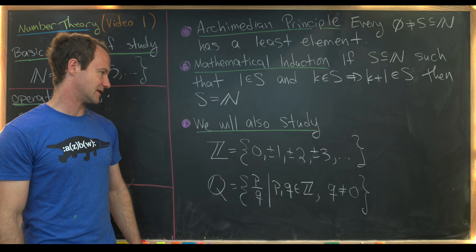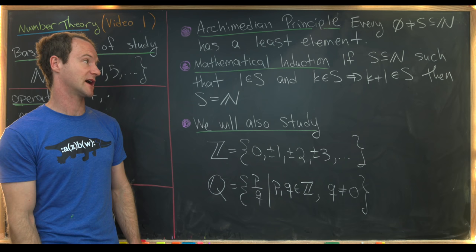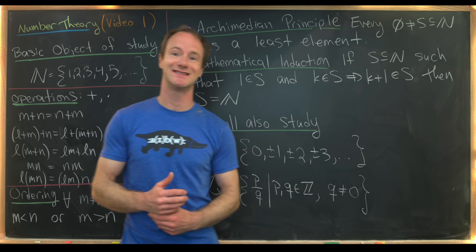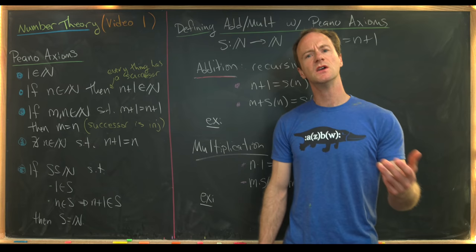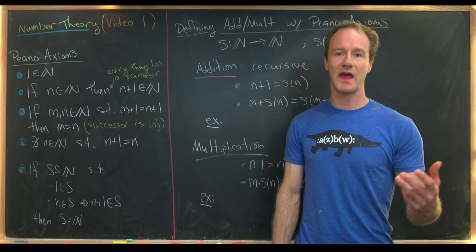Now that we've got these well-known objects and facts out of the way, let's jump into our main goal of this first video, which is to look at the Peano axioms and show that addition and multiplication in the natural numbers satisfy these axioms. We want to look at a more formal approach to the natural numbers called the Peano axioms.